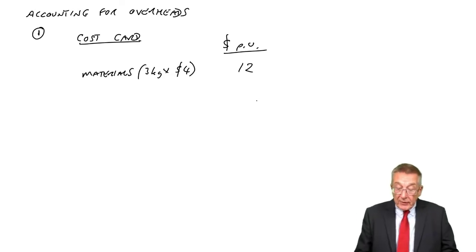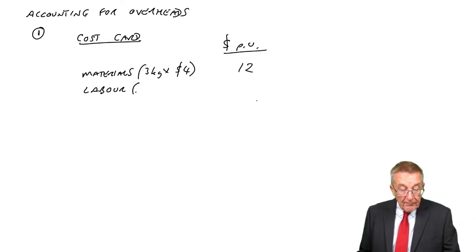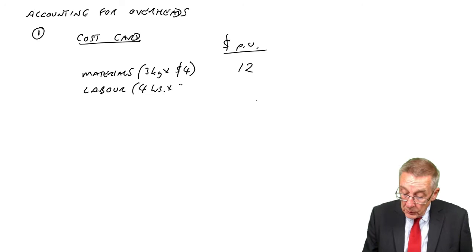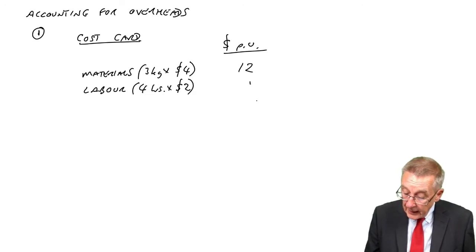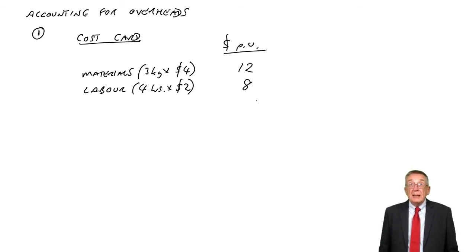What else? We've got labour. It takes four hours to produce, and labour's paid at two dollars per hour, a total of eight. So far, a cost of 20. And although we don't normally label it, that's the prime cost, $20.